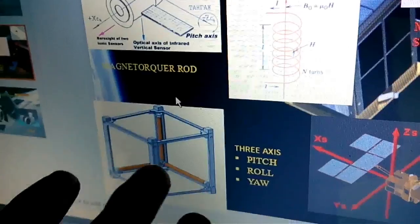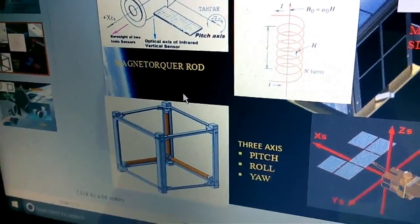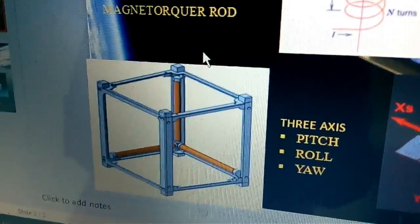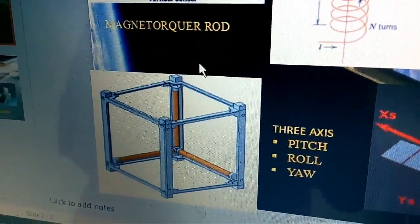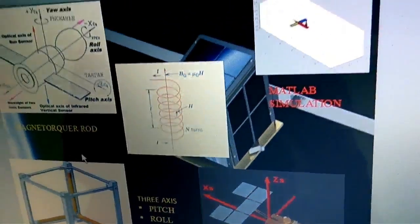After fixing those three rods to the prototype of the CubeSat, we have to calculate the torque which is generated in the CubeSat by aligning with its ambient magnetic field. Further, we have to do some simulations in MATLAB.